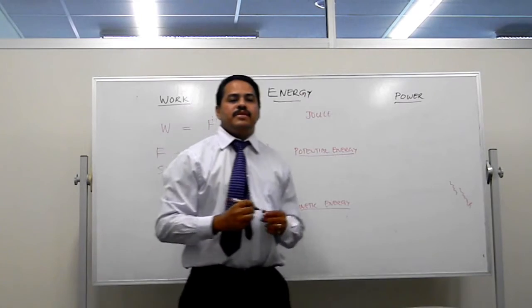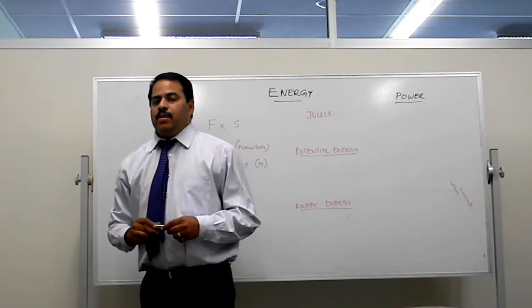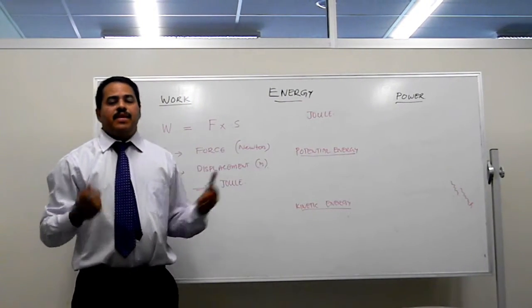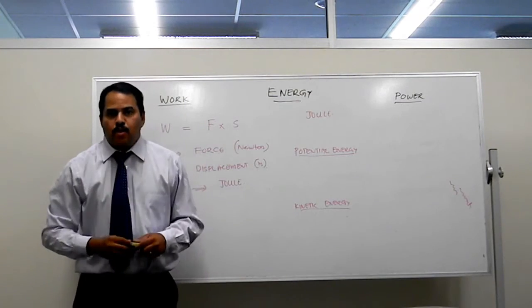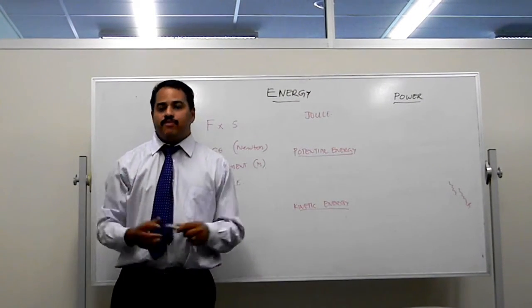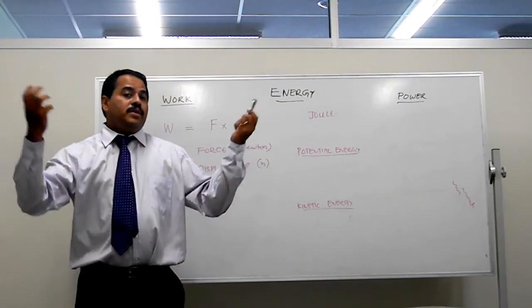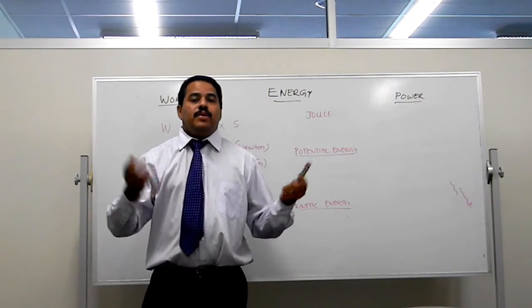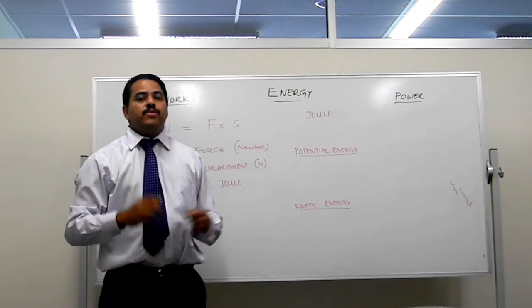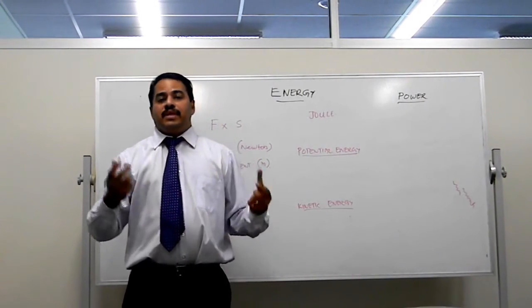What is this potential energy? Potential energy is the energy possessed by an object because of its height from the datum, because of its position. For example, water stored in a dam because it is at a height has potential energy.